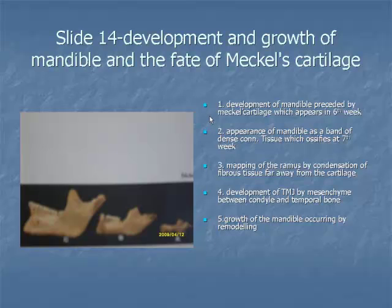Item 6: Although the cartilage does not participate in the formation of bone of the mandible, its remnants may still remain at the symphysis as nodules of cartilage until birth. Also, the most dorsal part of the cartilage ossifies to form the ear ossicles, that is, the malleus and incus. Behind the body of the mandible, the perichondrium of Meckel's cartilage persists as the sphenomandibular and sphenomalleolar ligaments.